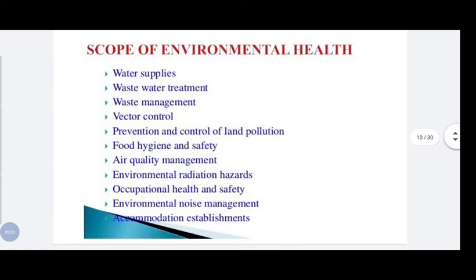What are the scopes of environmental health — meaning where we can work if we study environmental health? The scope includes water supplies, wastewater treatment, waste management, vector control, prevention and control of land pollution, food hygiene and safety, air quality management, environmental radiation hazards, occupational health and safety, environmental noise management, and accommodation establishment.